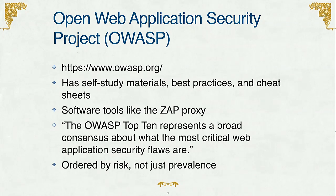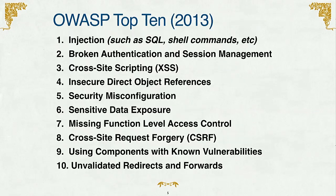They also have software tools like Zap Proxy, which allows you to intercept requests and potentially hack your application. They also published the OWASP Top Ten — the current version was published in 2013, they're about to update it for 2017, but it won't be very different. This is a consensus about the top ten things you as a web application developer should know about in terms of security, and these are ordered essentially by risk, not just prevalence.